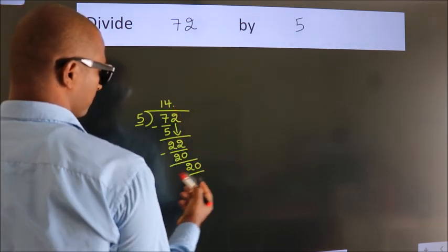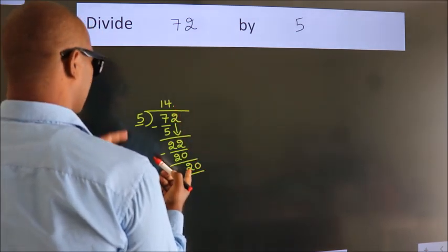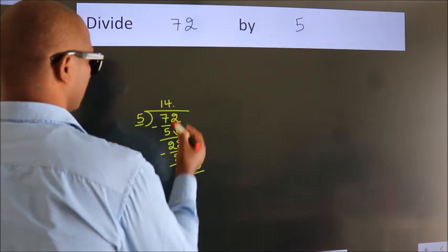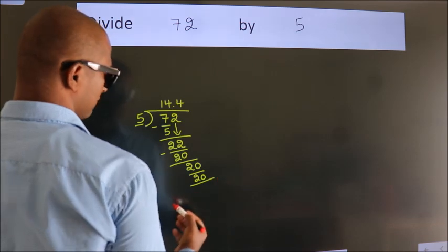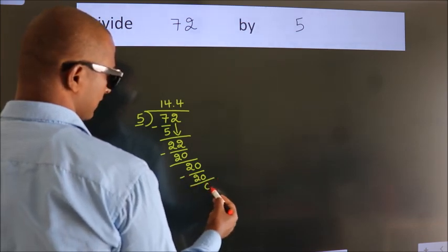So, 20. When do we get 20? In 5 table. 5 fours 20. Now, we subtract. We get 0.